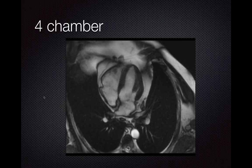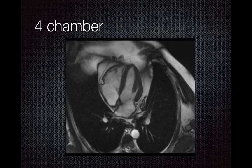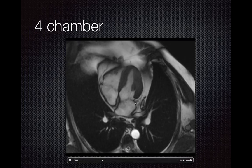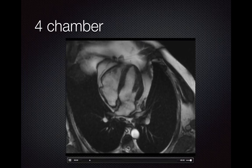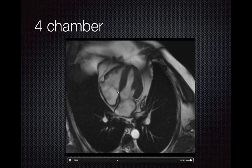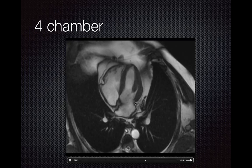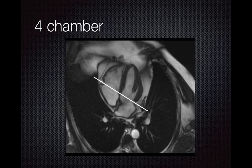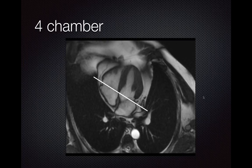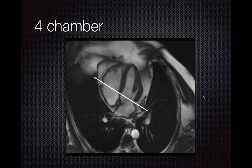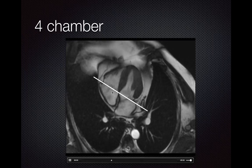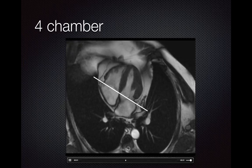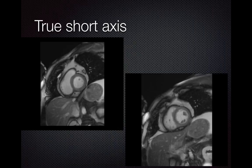Here's our four-chamber view as a cine image. You can see very nicely the LV, left atrium, RV, and right atrium, with the tricuspid valve and mitral valve clearly visible. From this four-chamber view, we set up our short-axis stack for functional evaluation, lining up along the valve plane going across from the mitral valve to the tricuspid valve. Two representative short-axis images are shown: one more toward the base with early papillary muscle visibility, and one mid-to-apical showing the papillary muscles very nicely.